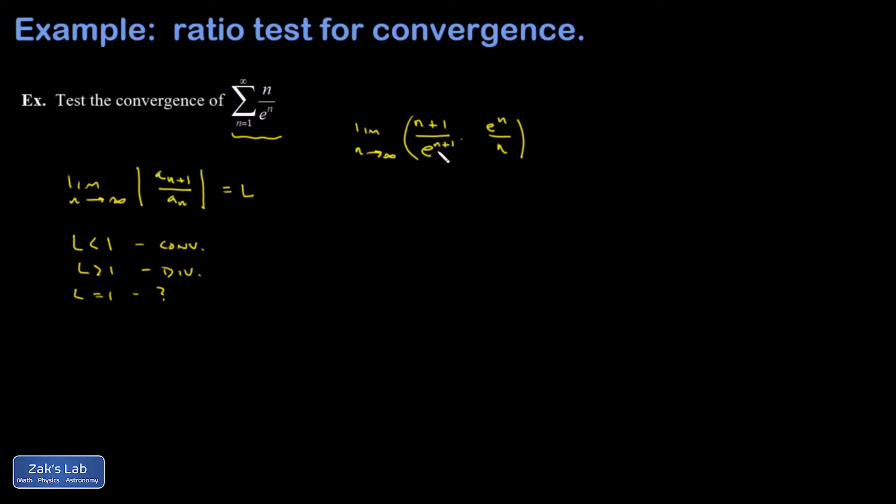I could write e to the n plus 1 as e times e to the n and cancel out n factors of e. So those are gone and I'm left with the limit of n plus 1 over e times n.